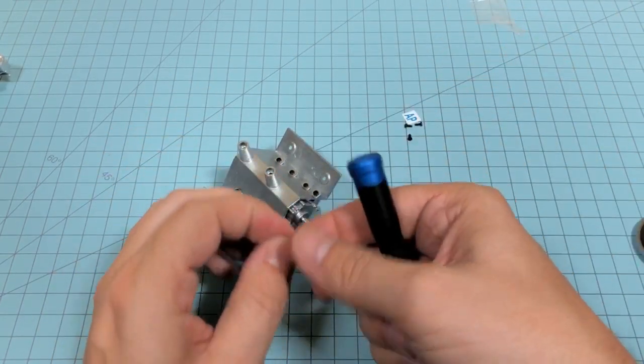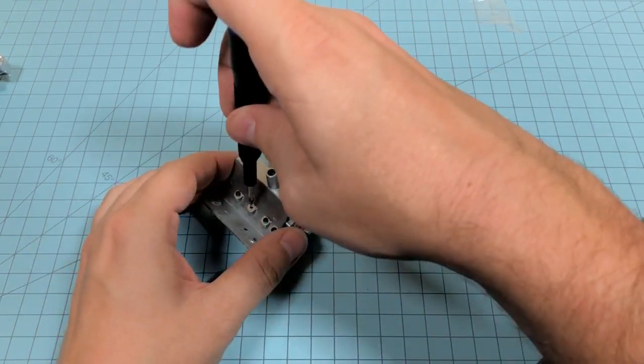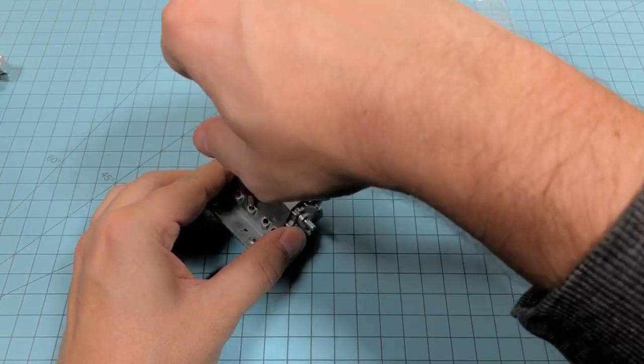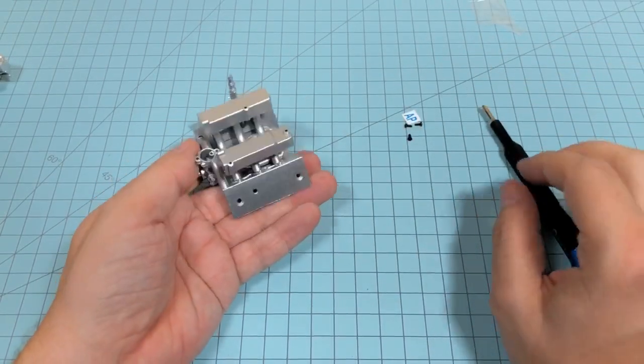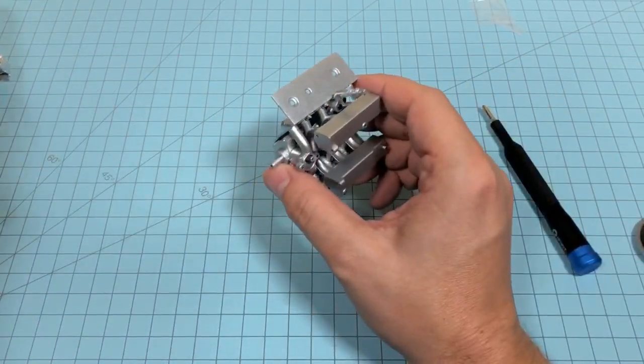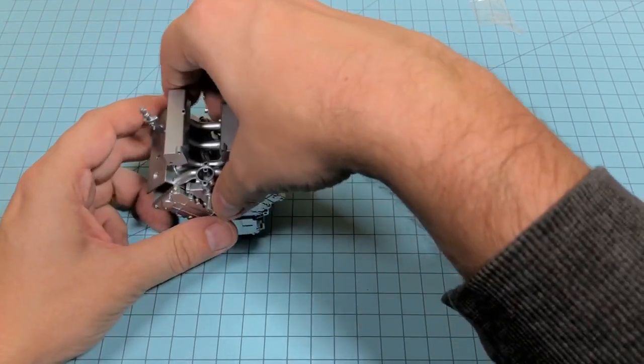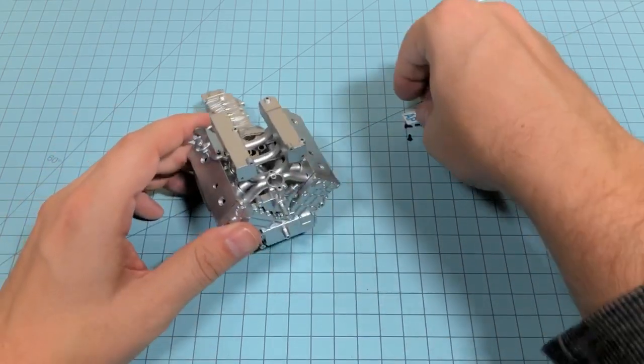All right, looks like we've got three screws left over, so we'll go ahead and add it to our extra screws, our extra stockpile of screws. All right, cool. So that's how that looks, and we'll go ahead and add this in.